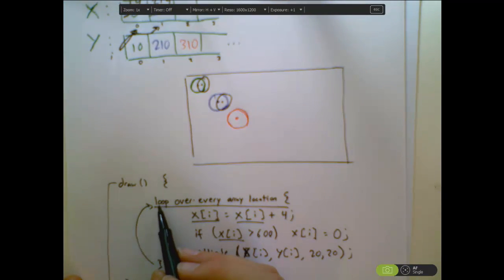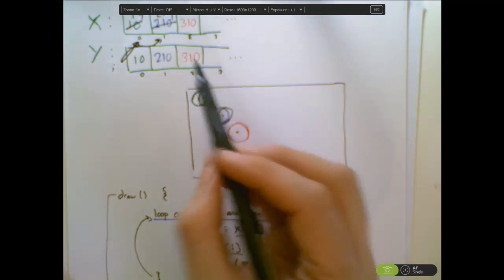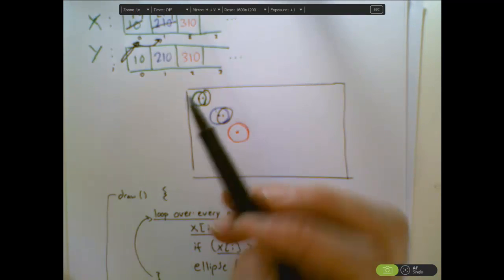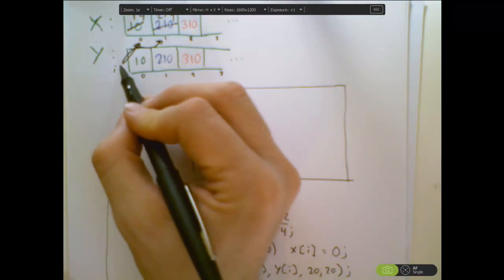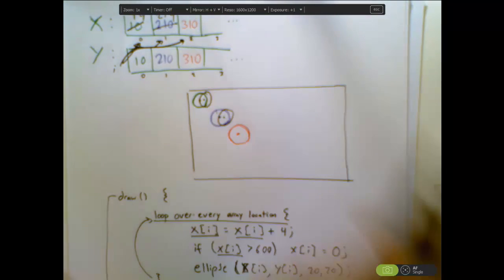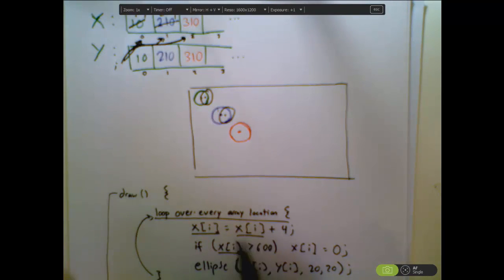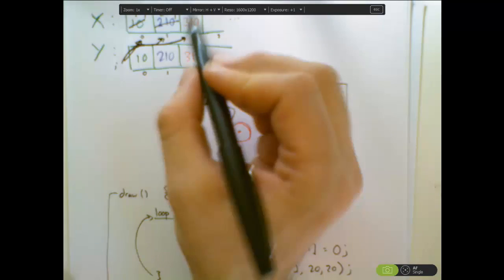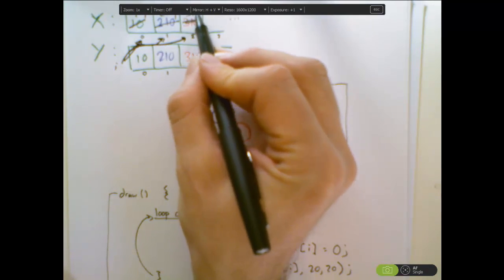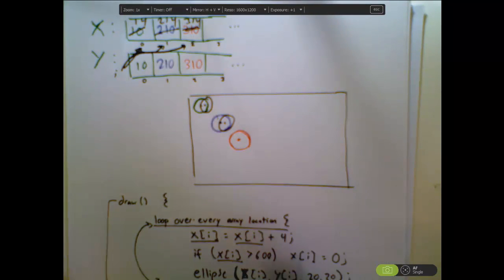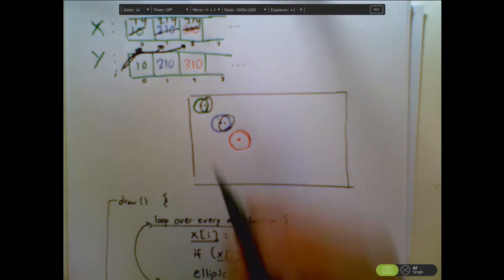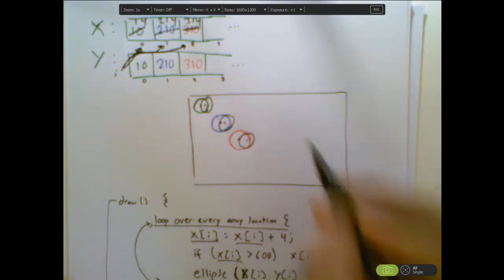Last time through, well, this list keeps going, but I'm just going to do it for the third example I have here. So when i is pointing to two now, I'm going to get the element out of location two, add four and save it. So I'm getting this number out, I'm adding four and I'm saving it. So now this is 314. I'm going to check if it's off the screen and then I'm going to draw an ellipse there. So that makes this one move over a little bit.